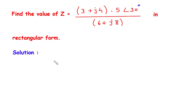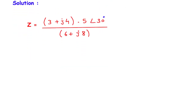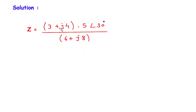Solution. First of all we will write what is given — the value of impedance is given: Z is equal to this value. Now here we can see this 3 + j4 is in rectangular form, this 5 at an angle of 30 degrees is in polar form, and 6 + j8 is again in rectangular form. We know that multiplication and division are better performed in polar form, and addition and subtraction are better performed in rectangular form.